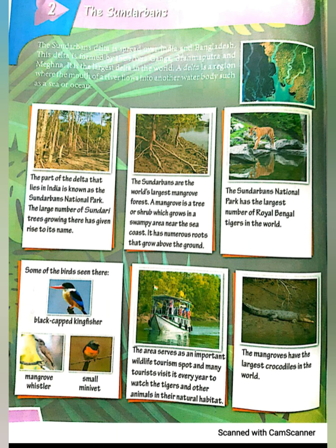The Sundarbans National Park has the largest number of Royal Bengal tigers in the world. Some of the birds seen there include the black-capped kingfisher, mangrove whistler, and small minivet. The area serves as an important wildlife tourism spot and many tourists visit it every year to watch the tigers and other animals in their natural habitat. The mangroves are also home to the largest crocodiles in the world.